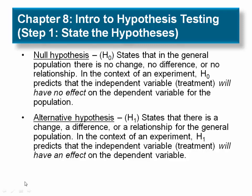As the name implies, the process of hypothesis testing begins by stating a hypothesis about the unknown population. Actually, we state two opposing hypotheses. Notice that both hypotheses are stated in terms of population parameters, because we always hypothesize about the population even though we do our work with a sample.